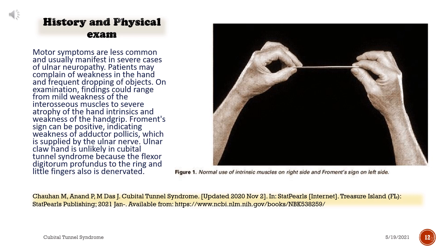Motor symptoms are less common and usually manifest in severe cases of ulnar neuropathy. Patients may complain of weakness in the hand and frequent dropping of objects. On examination, findings could range from mild weakness of the interosseous muscles to severe atrophy of the hand intrinsics and weakness of hand grip. Froment's sign can be positive, indicating weakness of adductor pollicis, which is supplied by the ulnar nerve. Ulnar claw hand is unlikely in cubital tunnel syndrome because the flexor digitorum profundus to the ring and little fingers is also denervated.